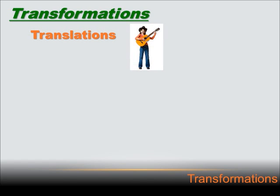Transformations are just changes in the shape of a figure. We're going to discuss three types of transformations today. The first is a translation — that's just when you slide a figure from one location to another. You don't turn it, you don't change its size or shape, you just slide it. For instance, if I took this picture of a girl and slid her over here, that would be a translation.